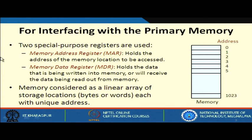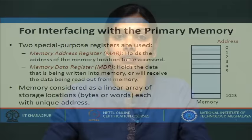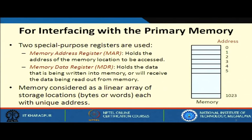The next register is called memory data register (MDR). MDR holds the data that is being written into memory or will receive the data read out from memory. When we write, we write data into memory. When we read, we can read an instruction or data. So memory data register will contain the instruction read from memory, the data read from memory, or the data to be written into memory — it can contain any of these three.